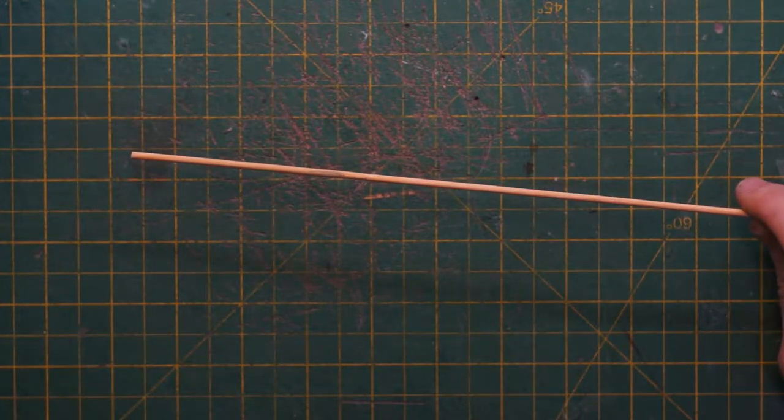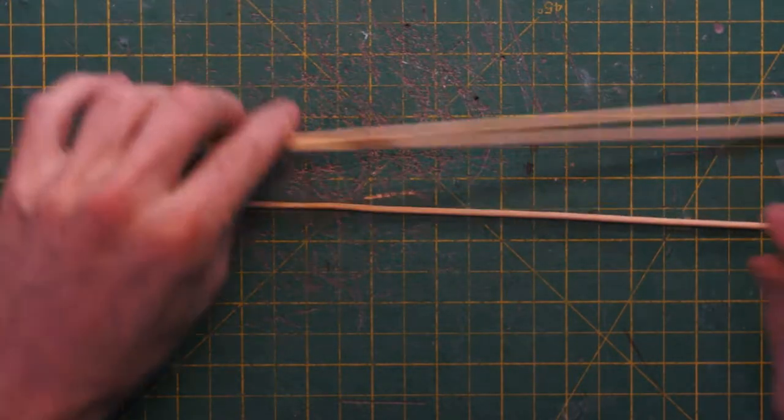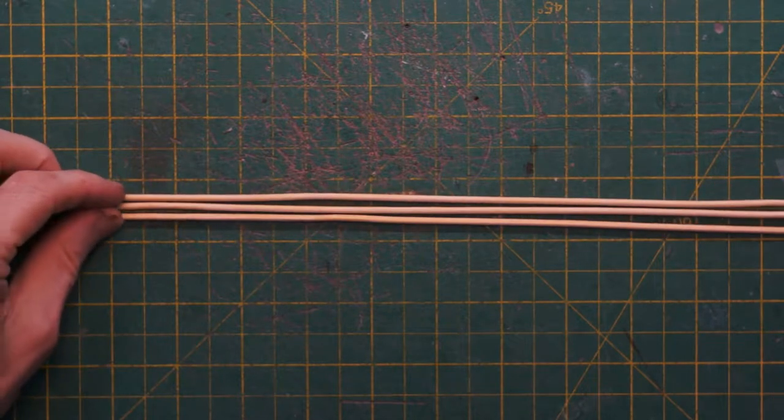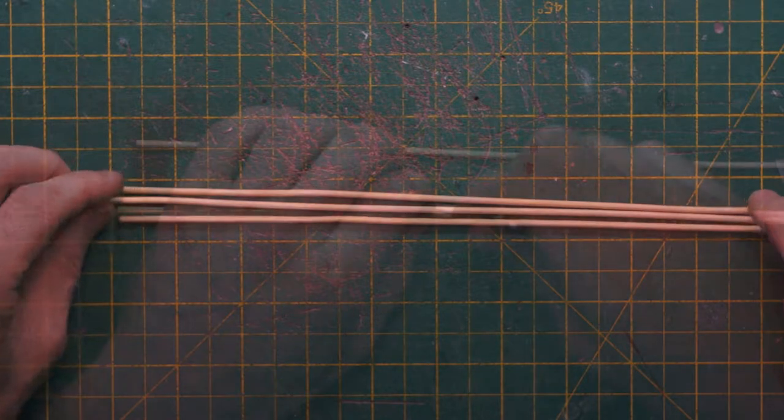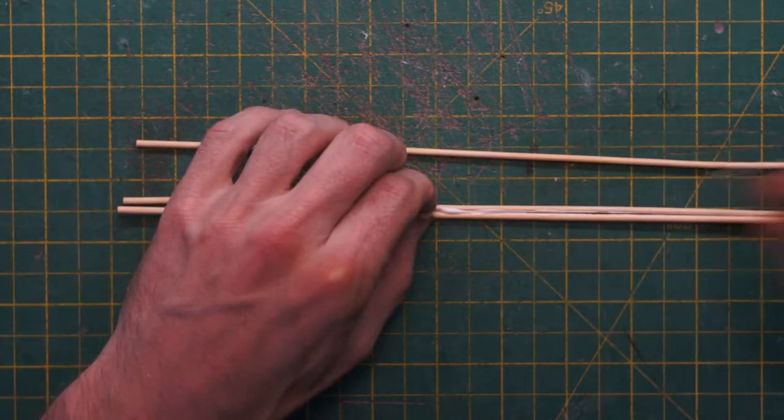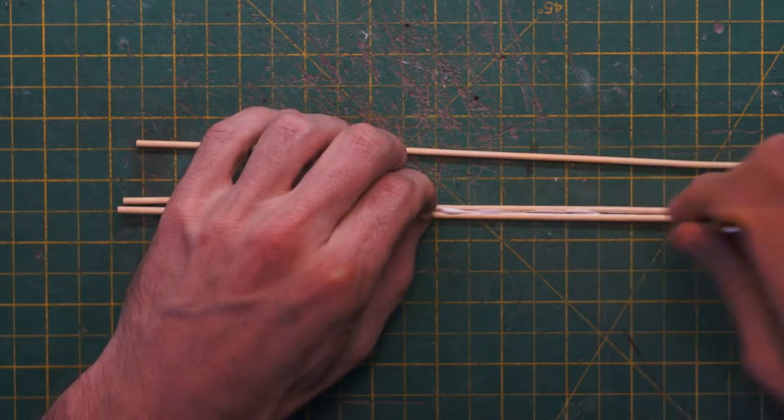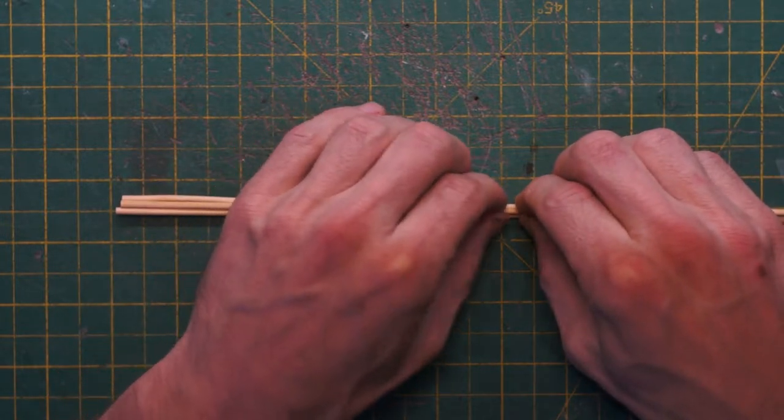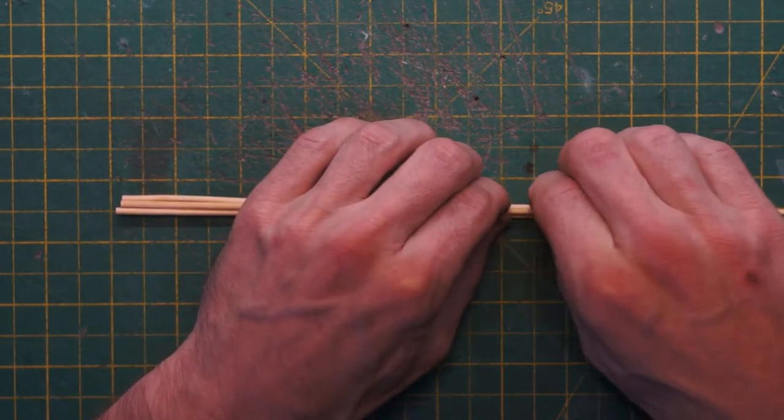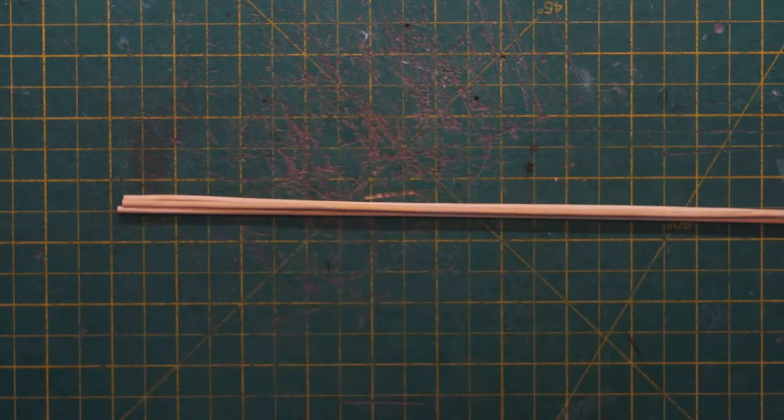Next to think about are the delicate columns on the front so I've got some cocktail skewers here and again it's a bit of an experiment but I'm going to glue them together and just see if that gives us an effect we like. Hmm now do I hold these together while drying? Ah masking tape.